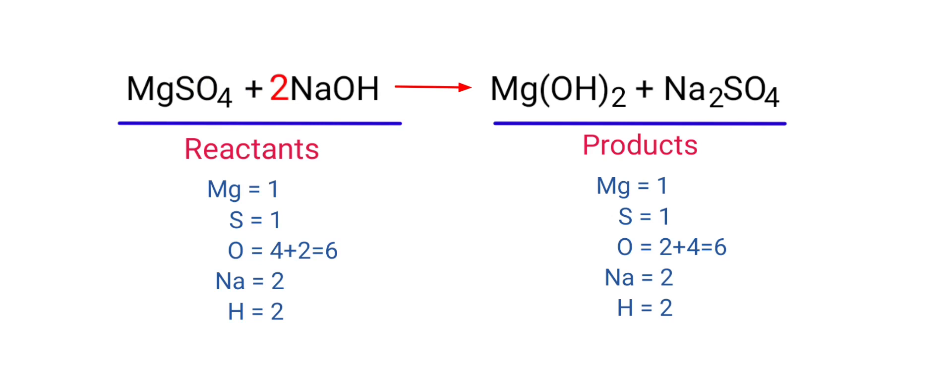The equation is now balanced. There are 1 Magnesium atom, 1 Sulphur atom, 6 Oxygen atoms, 2 Sodium atoms and 2 Hydrogen atoms on both sides.